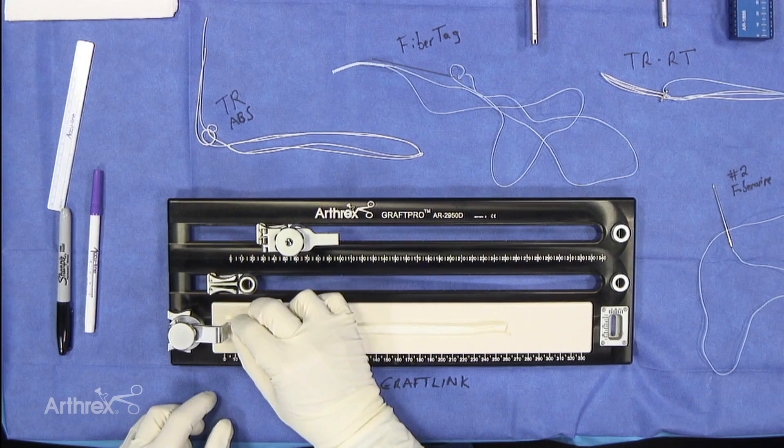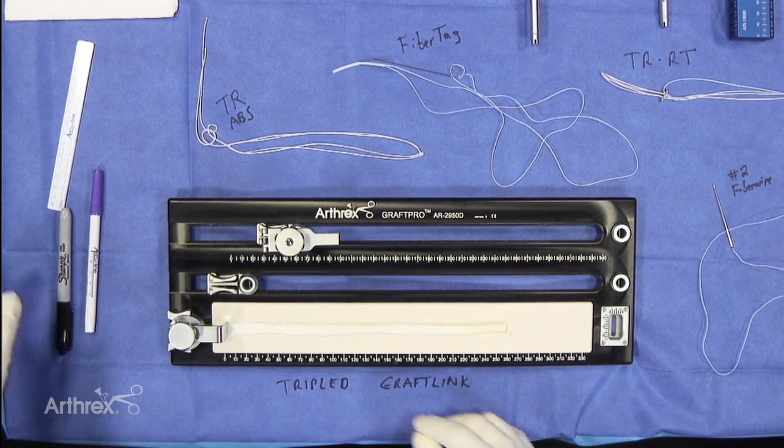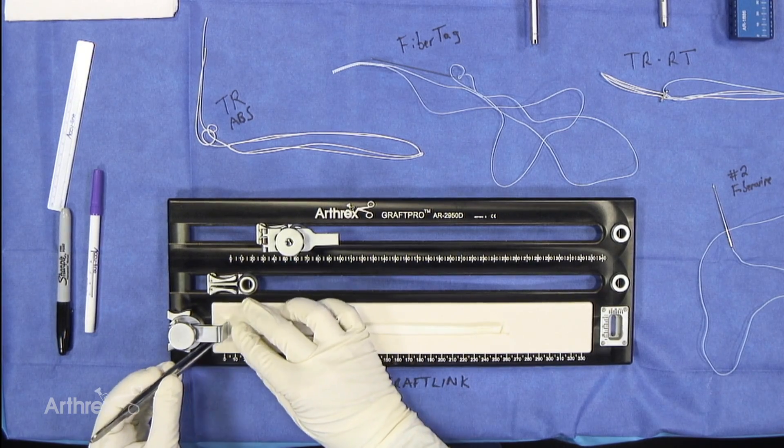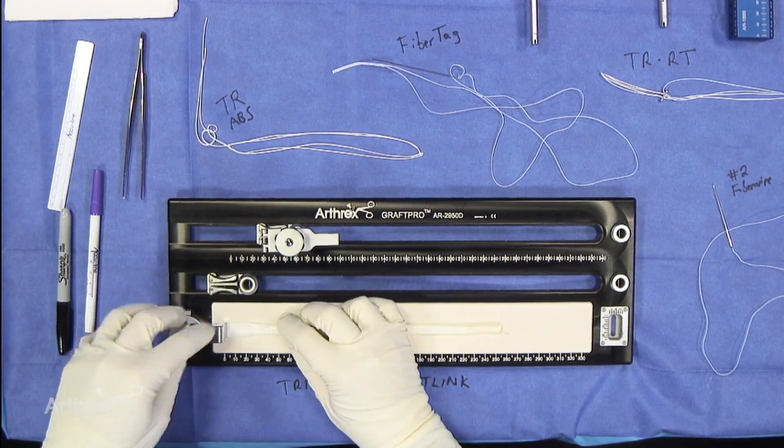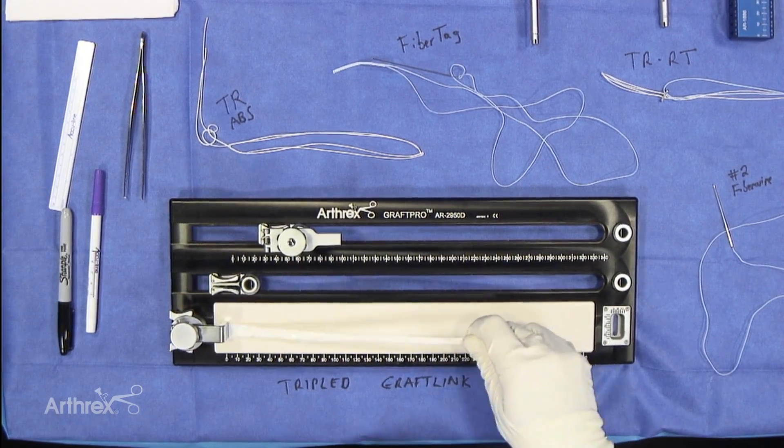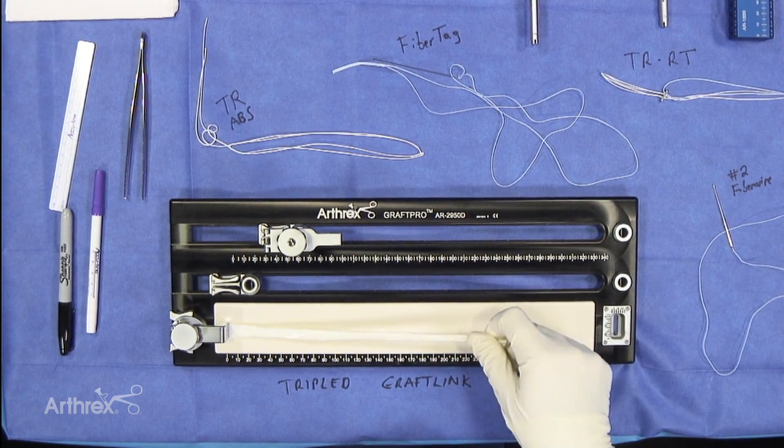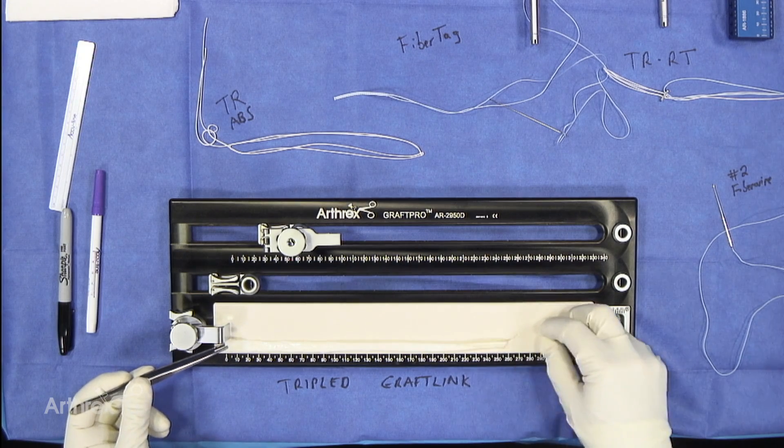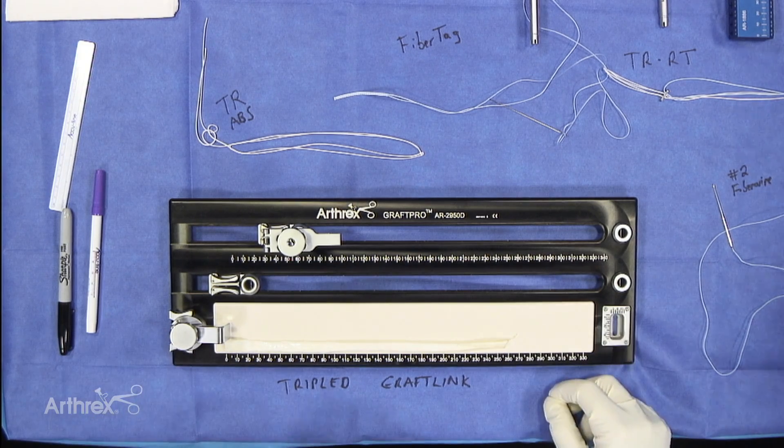Now one of the things I'm going to show you is a graft clamp. This is something relatively new, and you can put your graft in there, secure this down, and now you have great tension for suturing the graft. So this graft measures right around 25 to 26 centimeters.